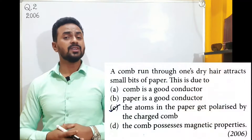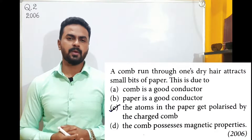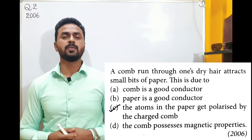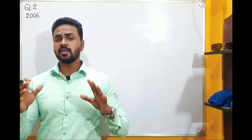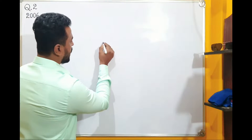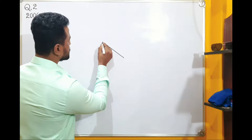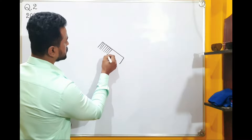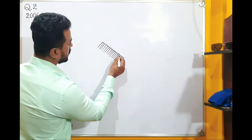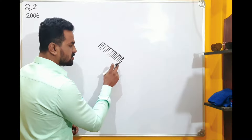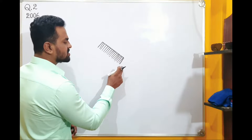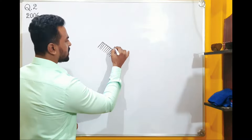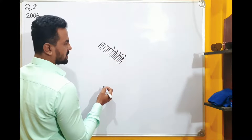A comb run through one's dry hair attracts small bits of paper. This is because the atoms in the paper get polarized by the charged comb. Let me explain. Consider a charged comb — when it is charged by rubbing with another material, charges get transferred to the comb. Suppose this comb becomes positively charged.